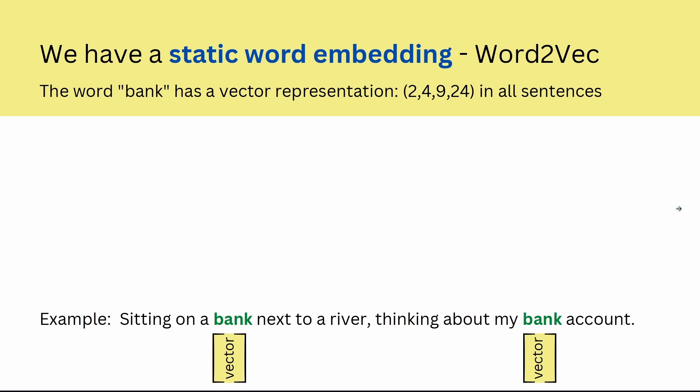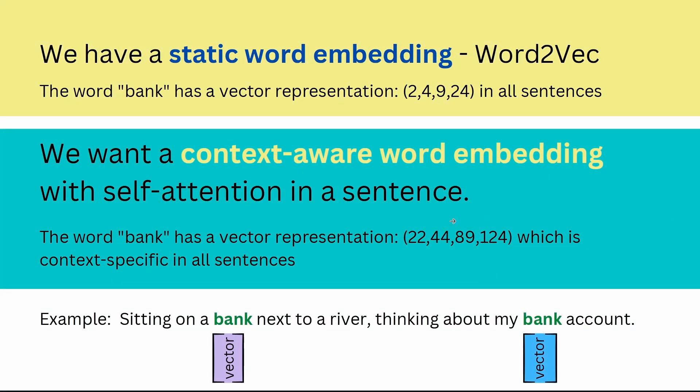This is what we want to optimize. This is the only reason that we want a context-aware word embedding. We have a self-attention mechanism in a sentence and the word bank has a vector representation that is now really different from the static case but it's also context-specific in all our sentences. In our example sitting on a bank, now you have a vector representation, and thinking about my bank account, this is now a completely different vector to this bank vector.